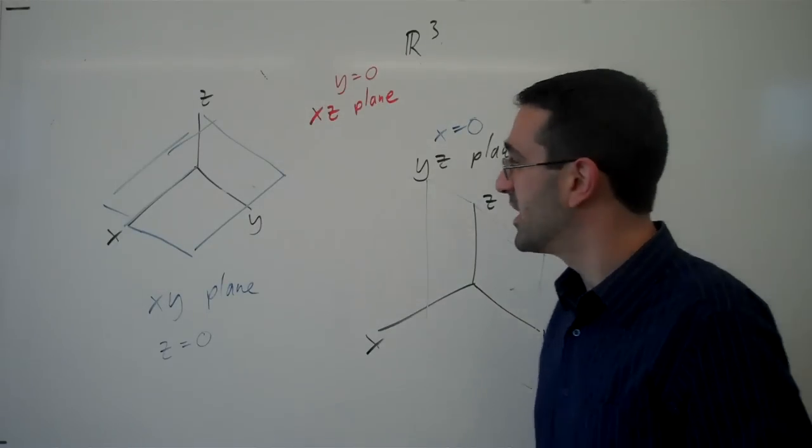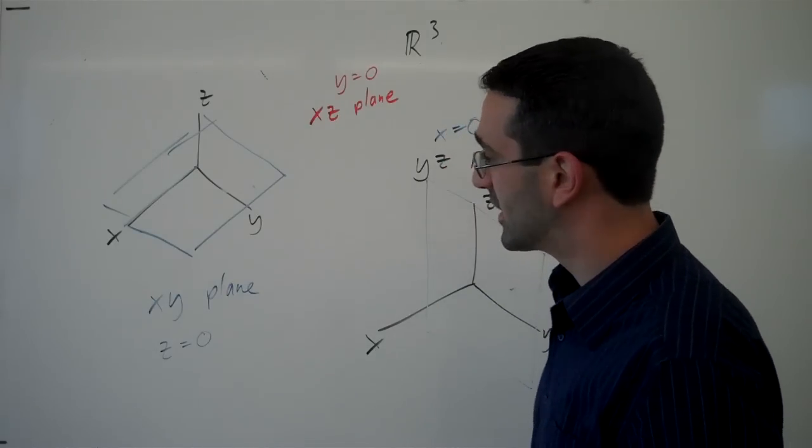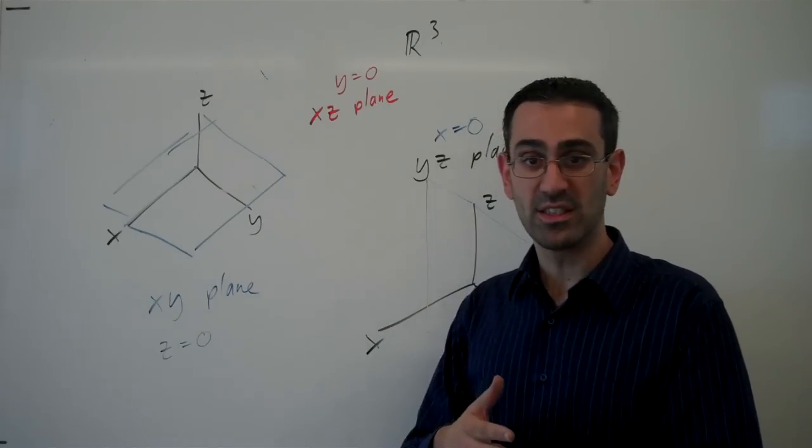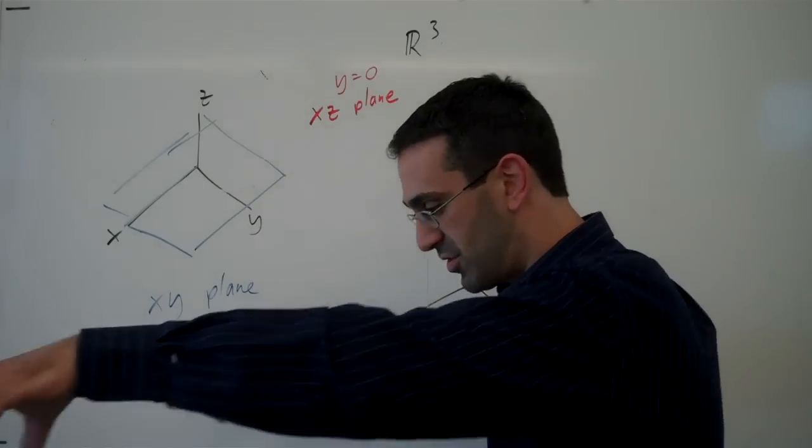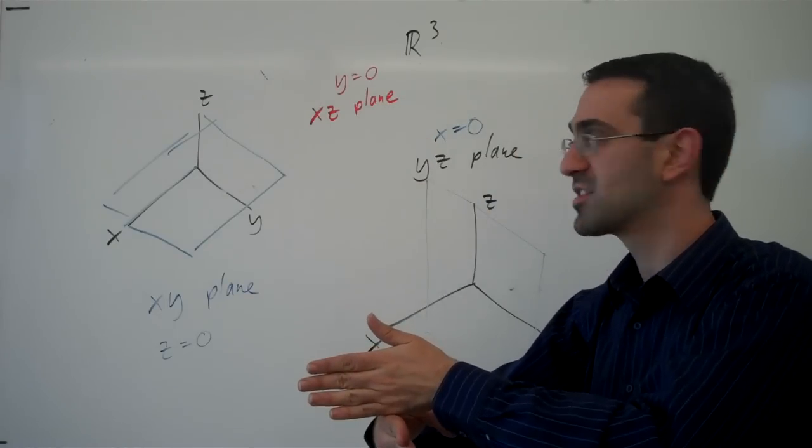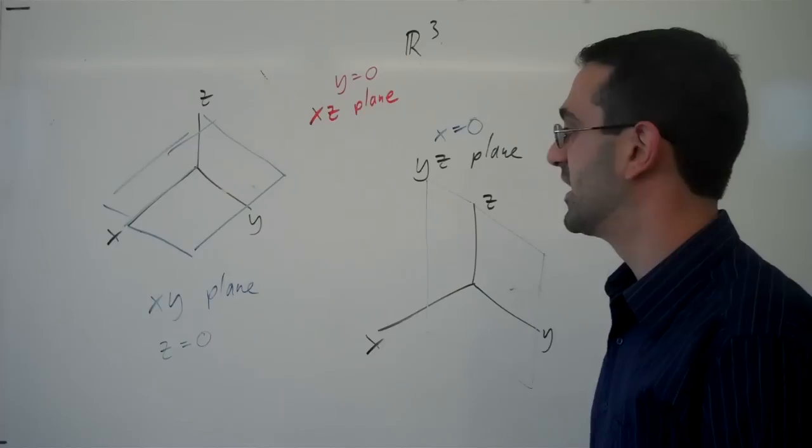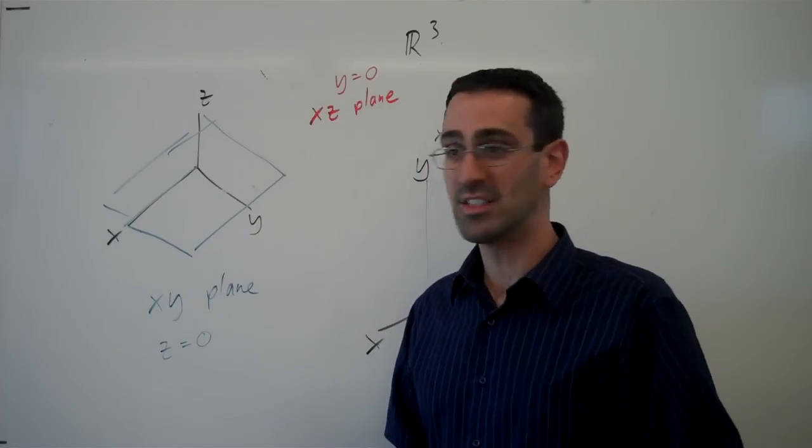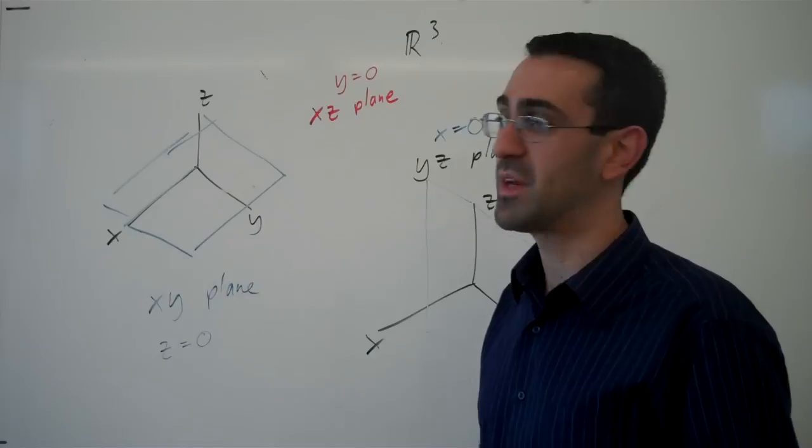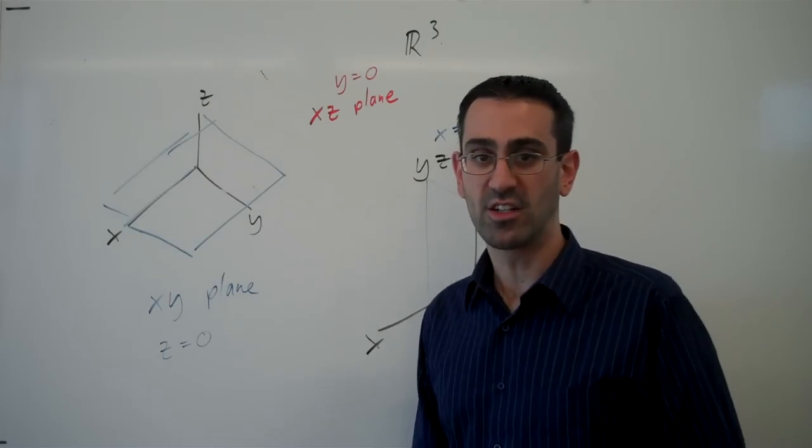Those are the coordinate planes. Now notice that there are three of them, and if we drew them all in, they would divide the space up into eight pieces, right? One, two, three, four on either side of the xz and yz planes, and then four more below the xy plane. And those are called the eight octants, kind of like we talk about the four quadrants in two-dimensional space. And so the coordinate planes divide space up into eight octants.